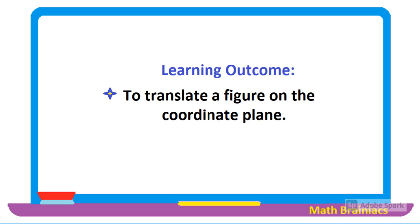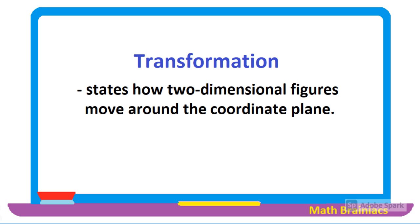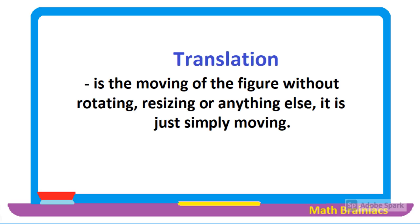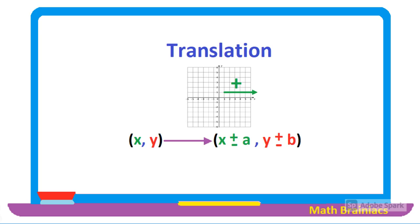We are going to learn today how to translate a figure in a coordinate plane. Transformation describes how two-dimensional figures move around the coordinate plane. A pre-image is the original, or the first appearance, of a figure in a transformation operation. A translation is the moving of a figure without rotating, resizing, or anything else — it is just simply moving. In a translation, it involves the ordered pair: the x value and the y value.